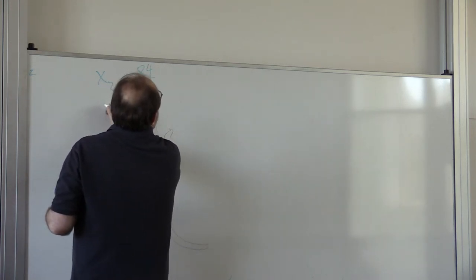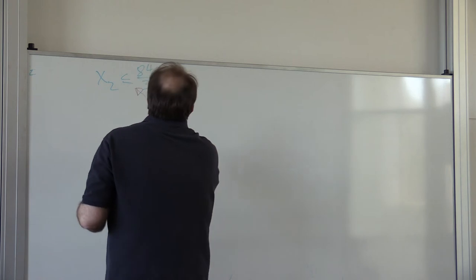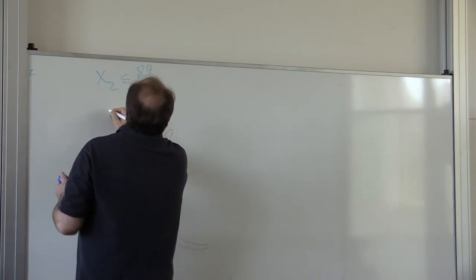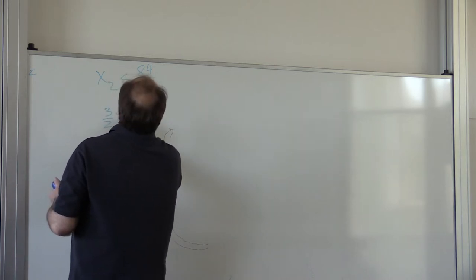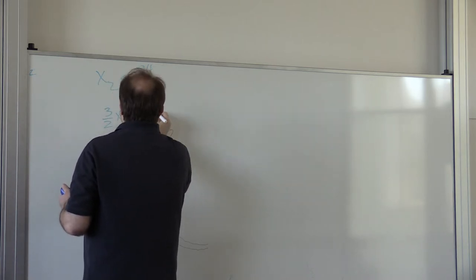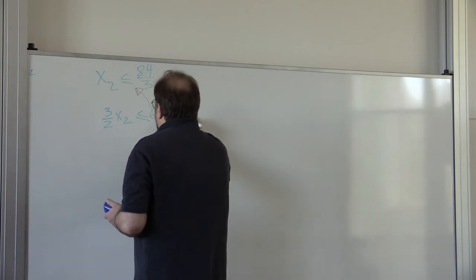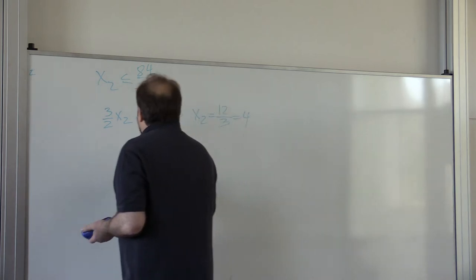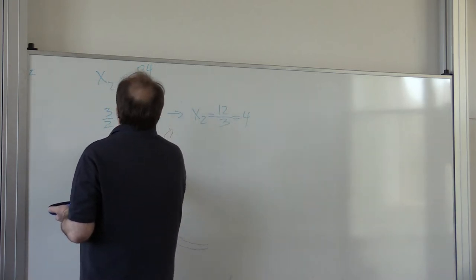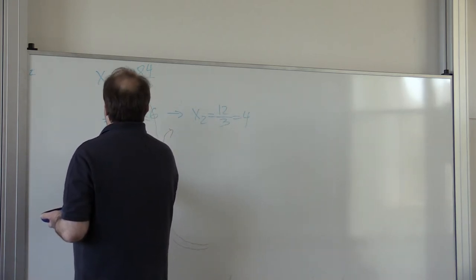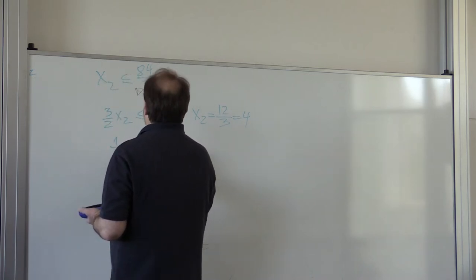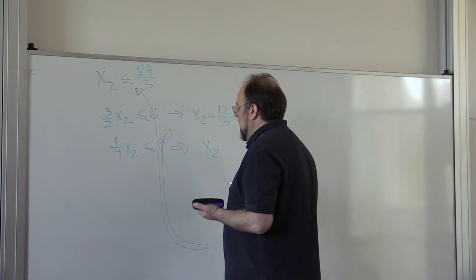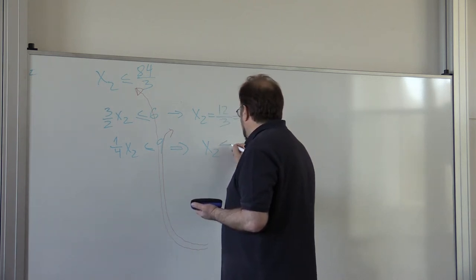x2 has to be smaller or equal than 84 over 3. Then we have the constraint that the second one, that 3 halves of x2 has to be smaller than 6 or equal to 6, which implies x2 is smaller than 12 divided by 3, which is 4.